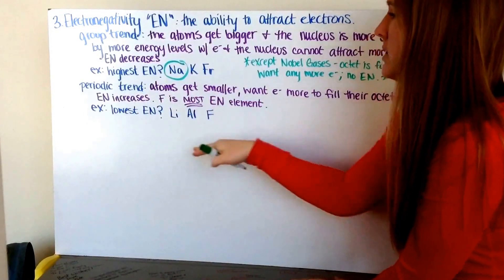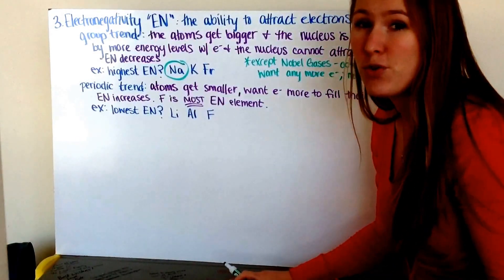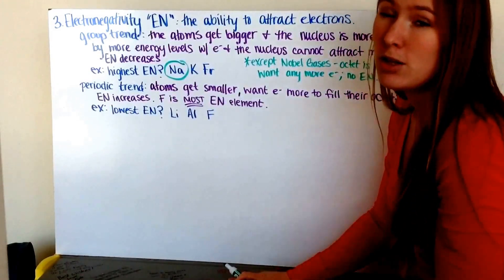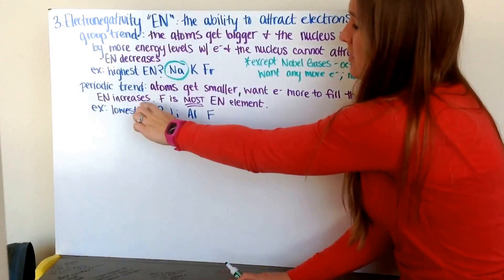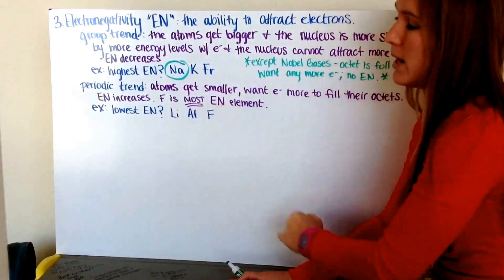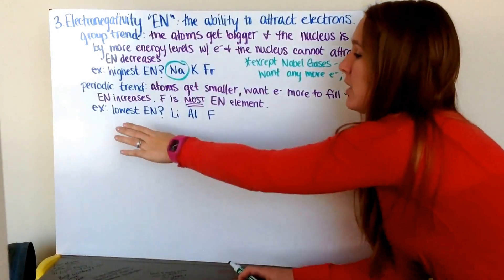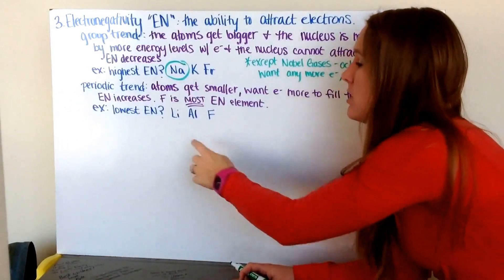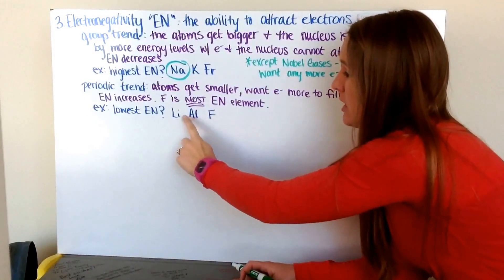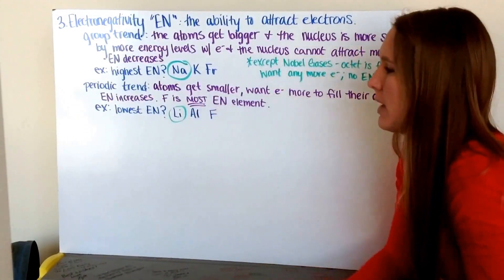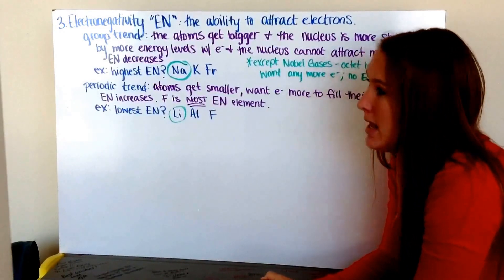My period trend: as I go across my period, my atoms get smaller, so they want electrons more to fill their octets. As they go farther to the right across the periodic table, they get closer to filling those spaces to end up with an electron configuration like a noble gas. Therefore, electronegativity increases. In fact, fluorine is the most electronegative element on the periodic table, so whatever elements are closest to fluorine have the highest electronegativity. For the lowest electronegativity among lithium, aluminum, and fluorine — aluminum is closer than lithium to fluorine, therefore lithium is going to have the lowest electronegativity. We're going to do a lot of practice with these — the biggest thing is to look at the size and whether the atom wants an electron or not.